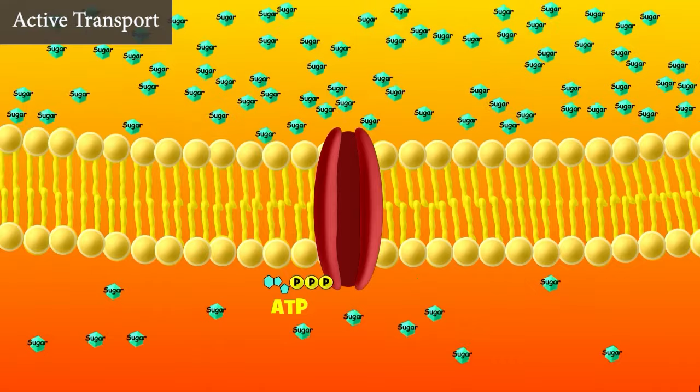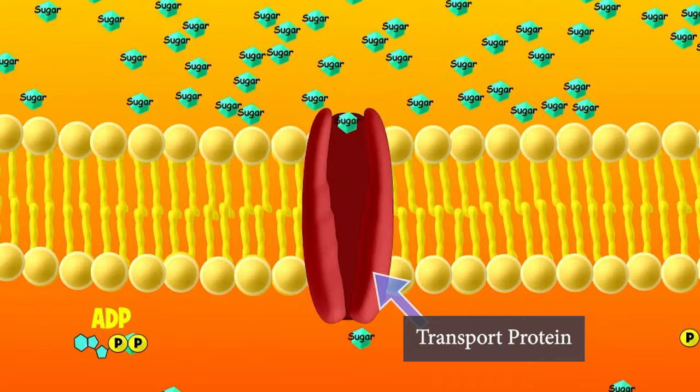It's called active transport. In active transport, ATP energy and transport proteins are used to pump particles against their concentration gradient from low to high.